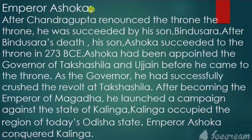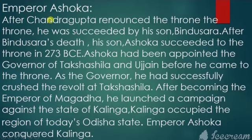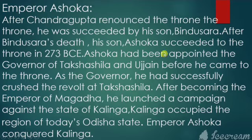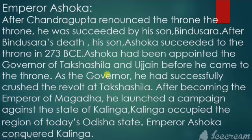After Chandragupta renounced the throne, he was succeeded by his son Bindusara. After Bindusara's death, his son Ashoka succeeded to the throne in 273 BCE. Before coming to the throne, Ashoka had been appointed the governor of Takshashila and Ujjain.